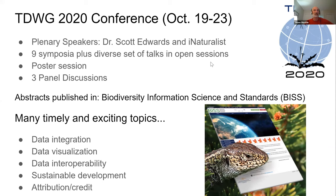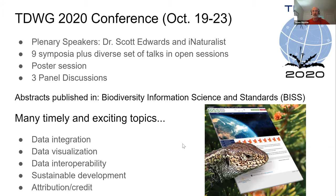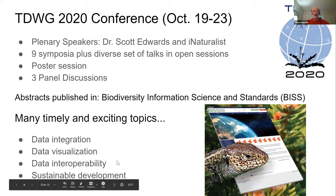We have nine symposia, lots of open session talks, a poster session, and three different panel discussions. We are just now publishing the abstracts, so you'll be able to see much of what will be discussed in advance because those abstracts will be published in our journal. We won't focus on any specific symposia here, but when you look across those talks, there are lots of things for everybody. Data integration, data visualization, data interoperability, sustainable development, and — something that's really essential — the concept of attribution and credit for the work that all of us do.